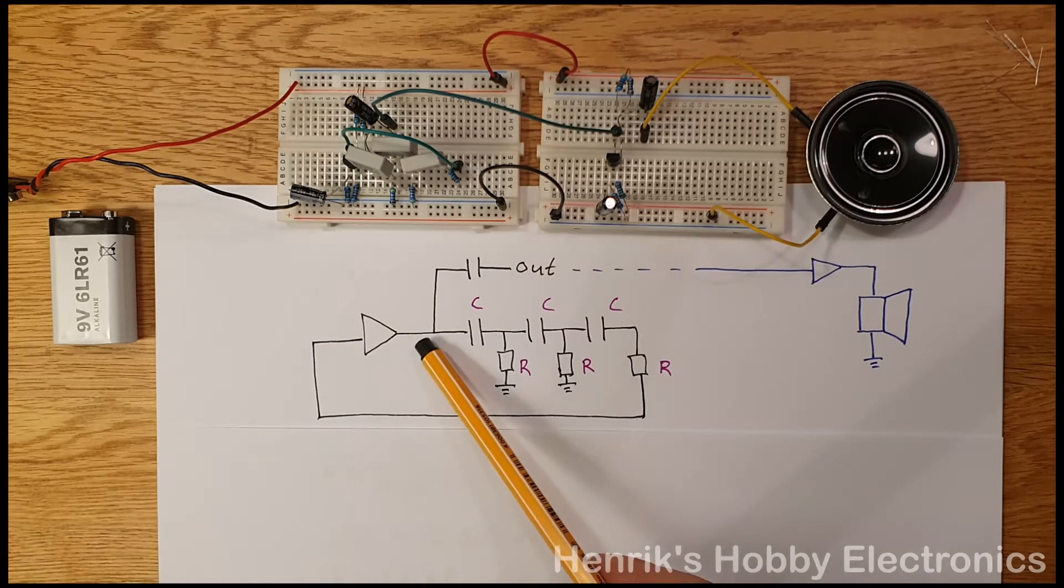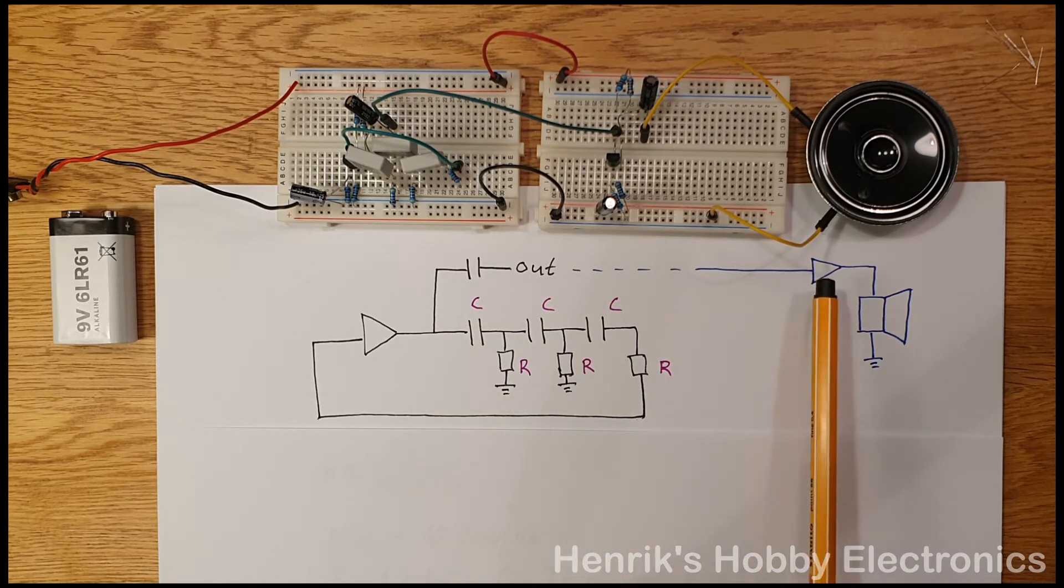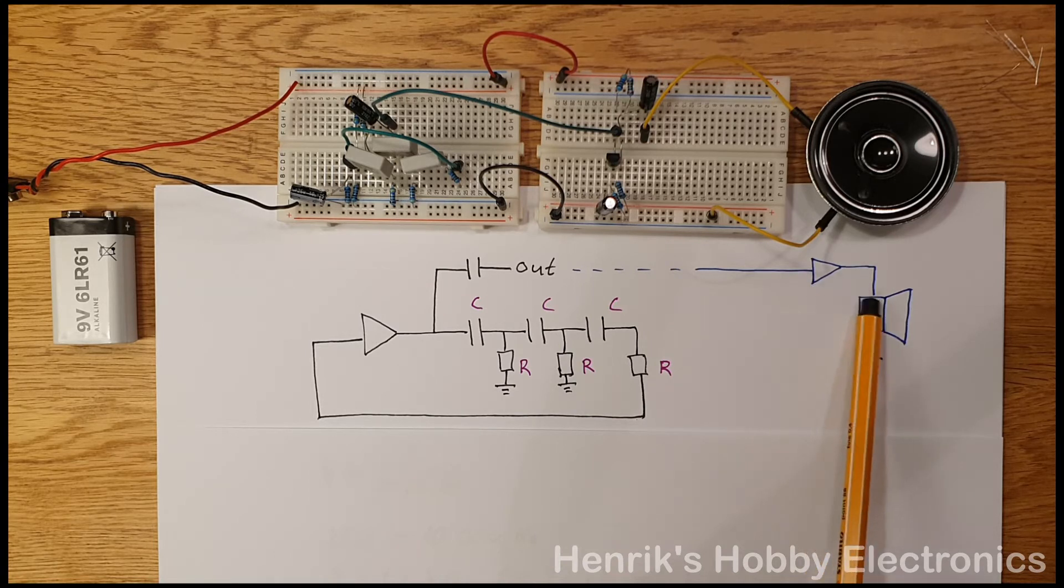We'll take the output here at the output of the amplifier and we'll have a DC blocking capacitor and then we'll have an amplifier and we'll pass the signal to a loudspeaker.